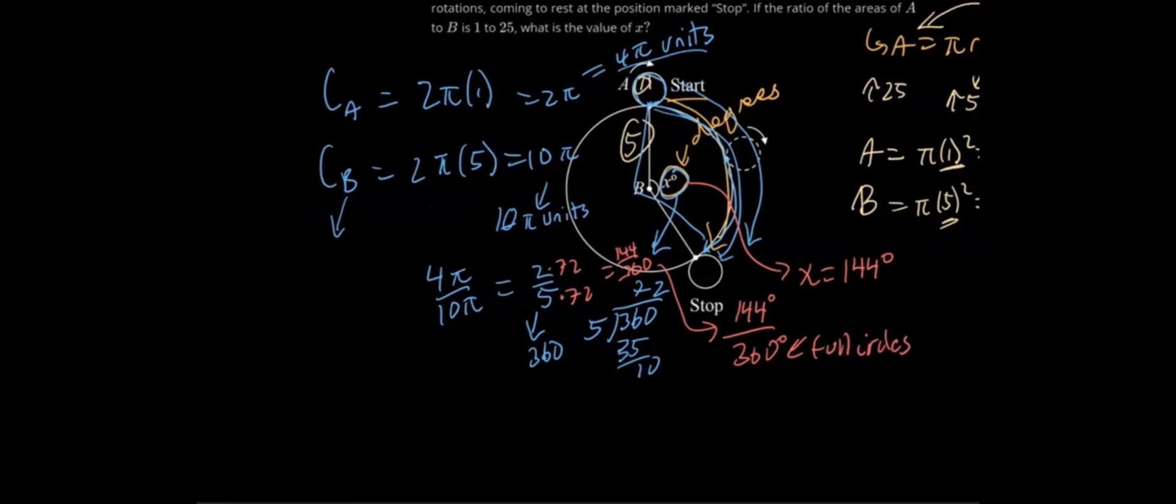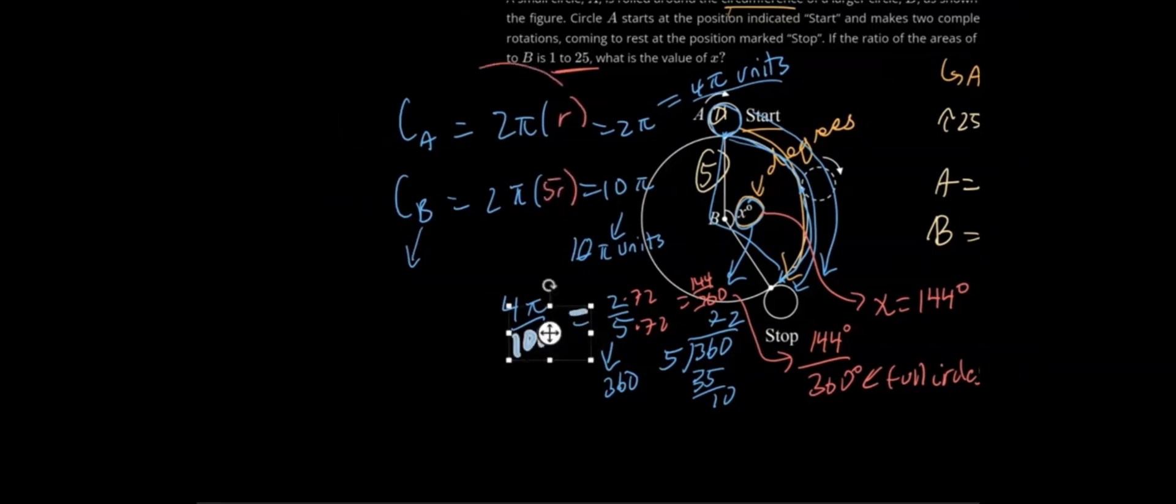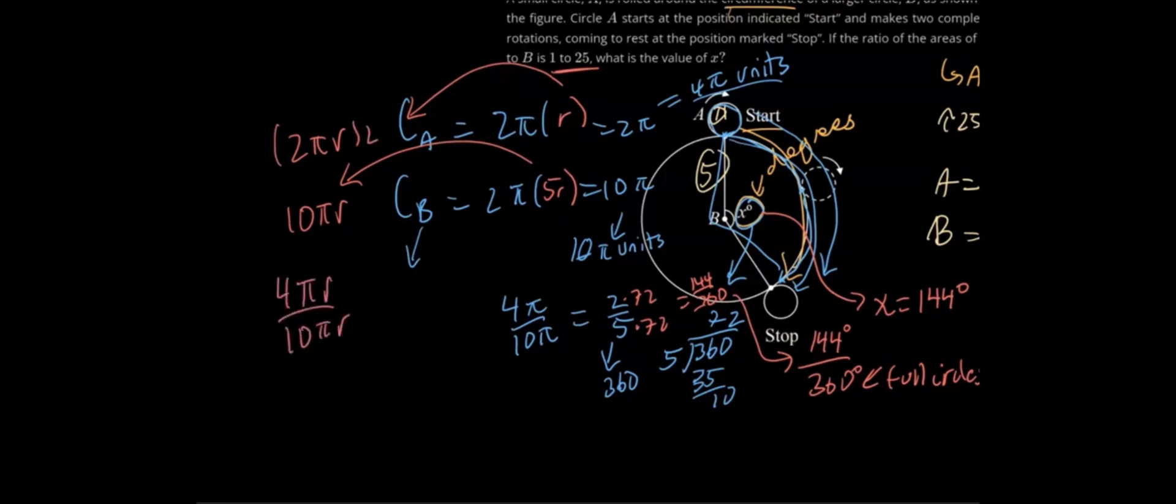Now I'm going to show you why it doesn't matter what our radius is, regardless of the fact that it is a ratio of 1 to 5. Let's say that we're just going to use a variable here. This is going to be r. This is going to be 5r. What we're going to get then is 2πr. And over here, we're going to get 10πr. And again, when we make that ratio here and we have to multiply that as 2 still, we're going to still get 4πr over 10πr.